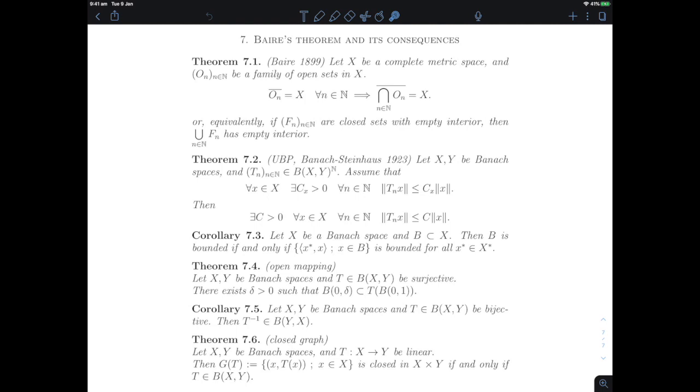Taking countable intersection of large sets in a topological sense still gives you a large set. Now you could take complements of all those sets and see an equivalent statement that tells you that if you take closed sets that are very small topologically, they have empty interior, then even taking a countable union of them is not going to change the fact that you get something small. So the countable union will still have empty interior.